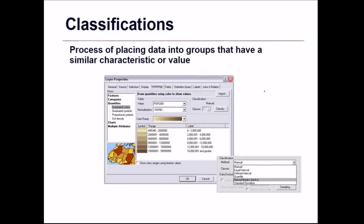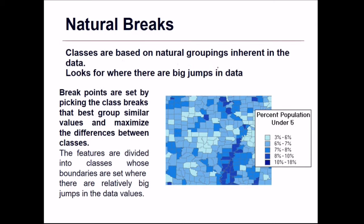Classifications: the process of placing data into groups with a similar characteristic or value is the classification. In ArcGIS you can go ahead, choose a color ramp, and select natural breaks. Natural breaks classes are based on natural groupings inherent in the data — it looks for big jumps in the data. Break points are set by picking the class breaks that best group similar values and maximize the differences between classes.